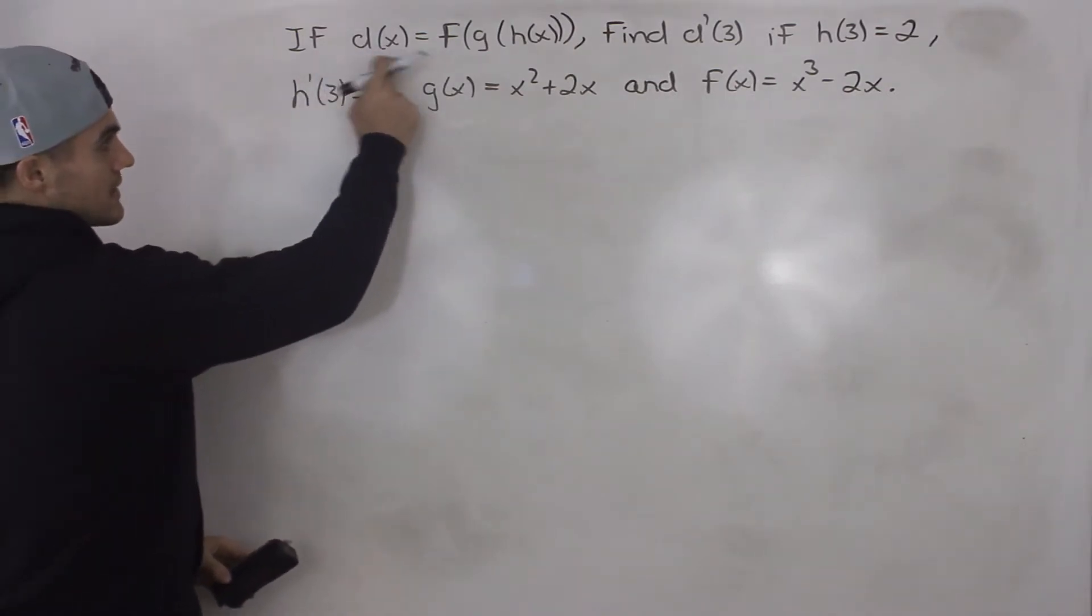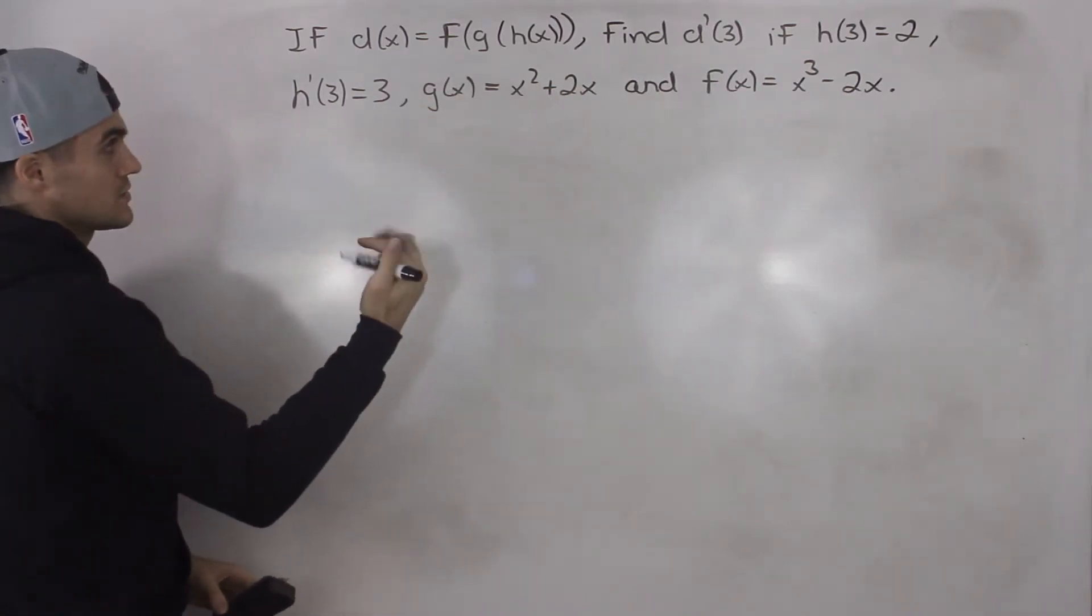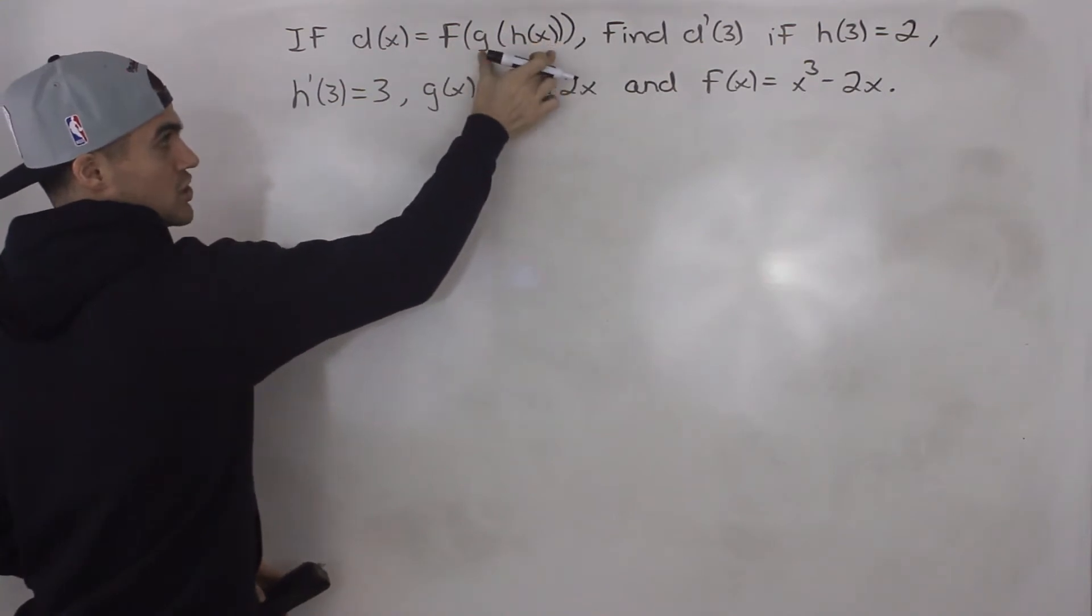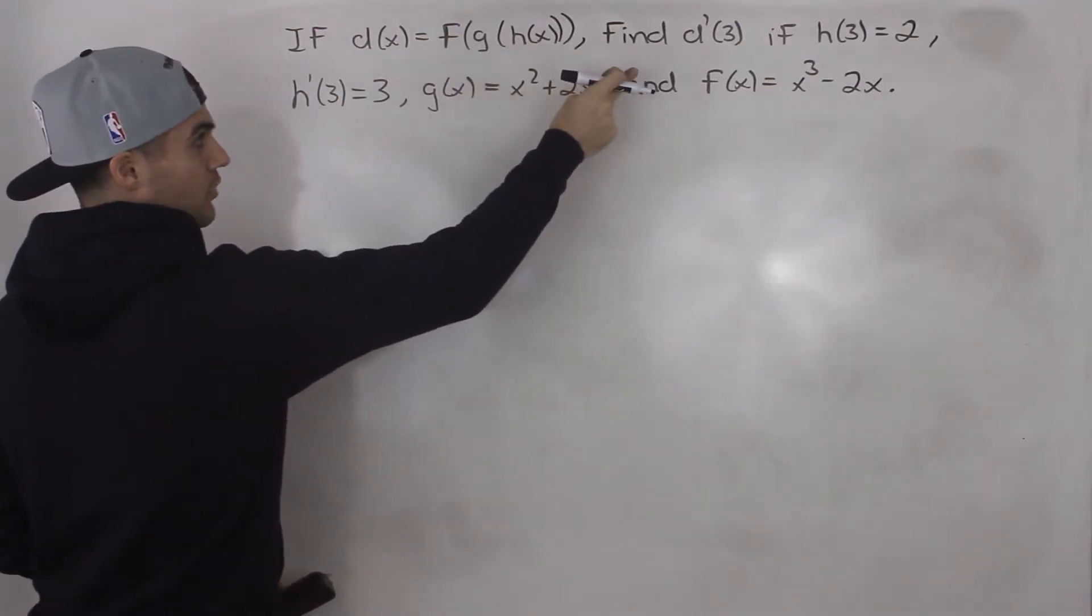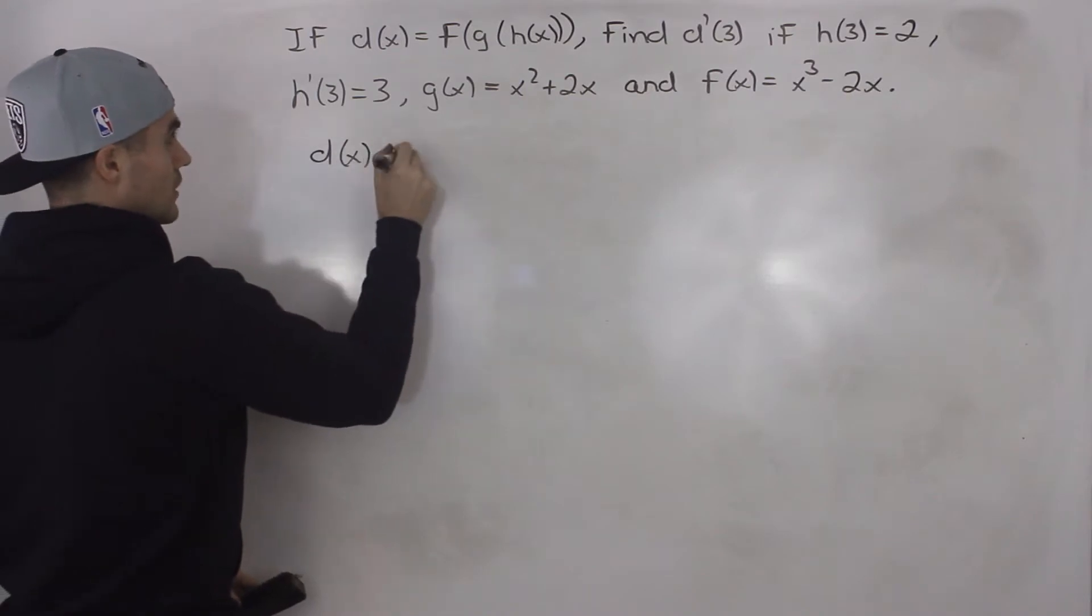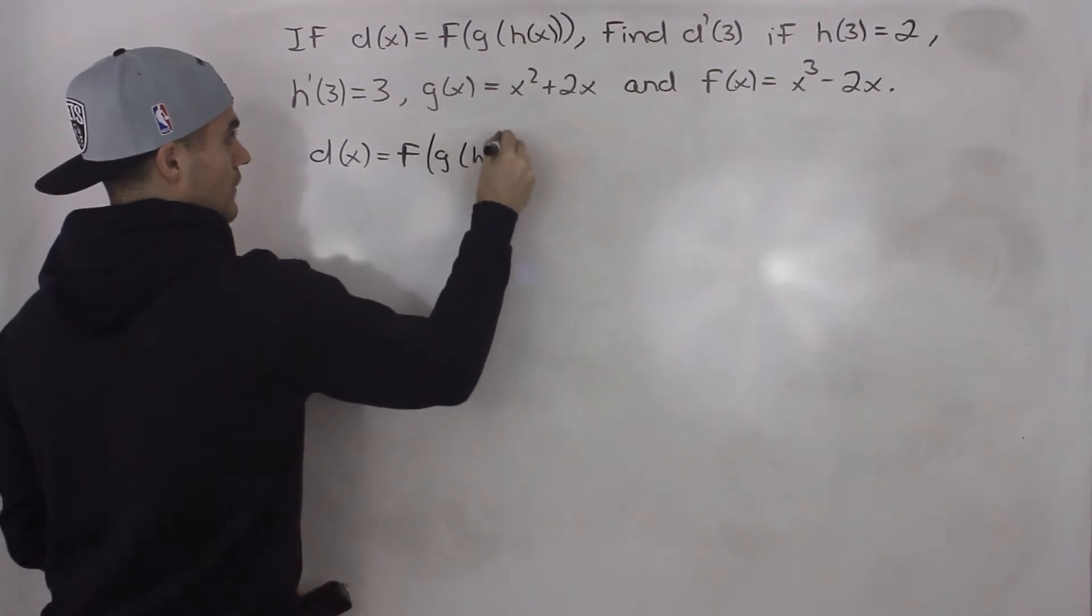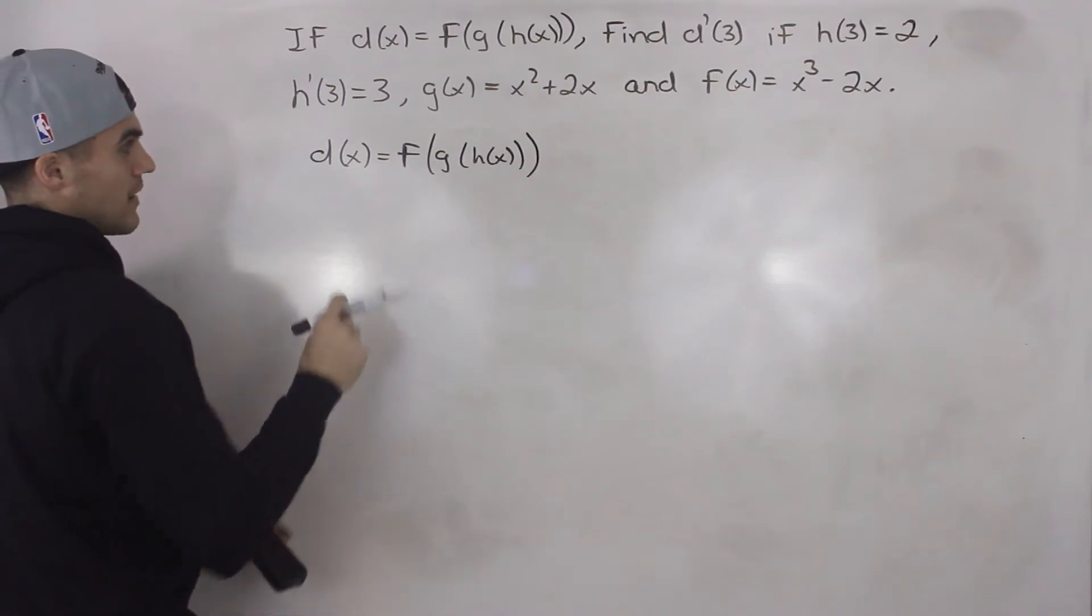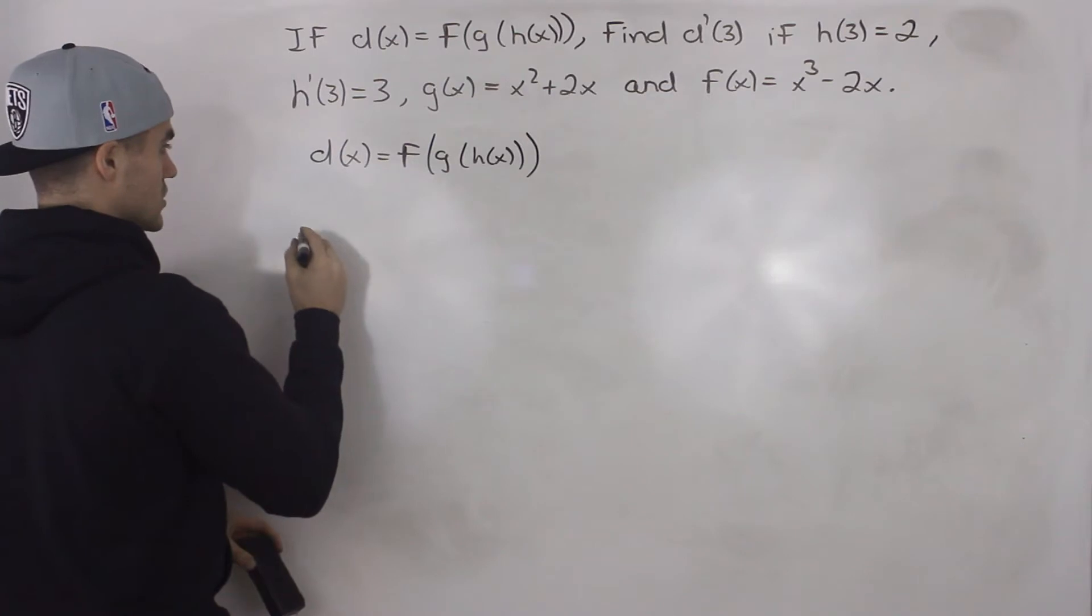Notice that this dx function that we're given is a composite function with three functions. So we have a function h of x within another function g within another function f. And we have to find d prime of 3. So we know that this function, let's rewrite it over here, we're going to have to find the derivative of it because we have to find d prime of 3.